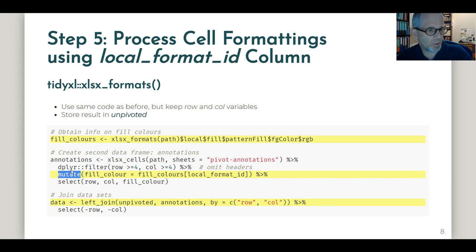Then we have a second dataset annotations, and we can join that to the original data that was called unpivoted. We just join by row and column to make sure that the data corresponds well.